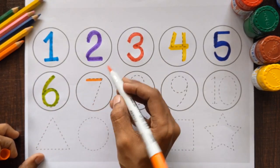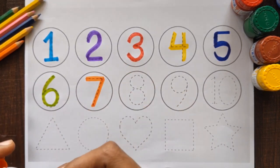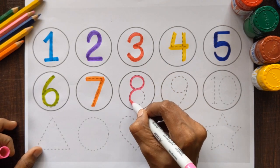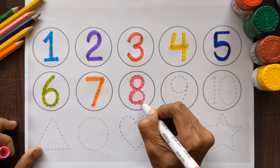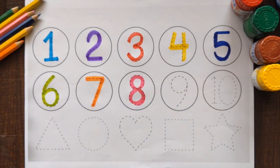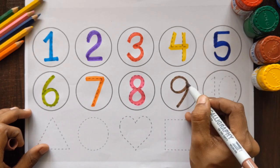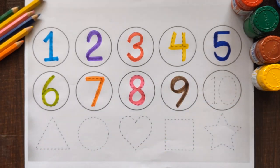Number 7, orange color. Number 8, pink color. Next is number 9. Number 9, brown color.